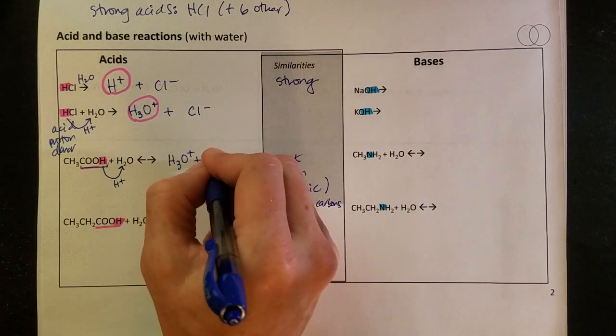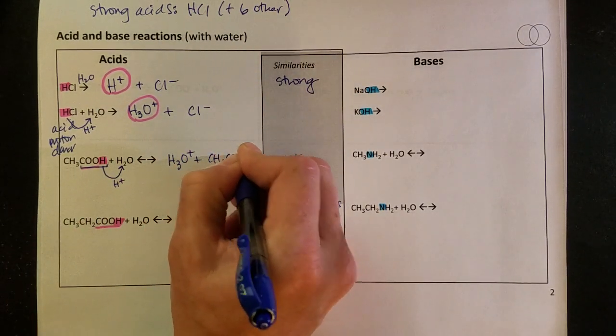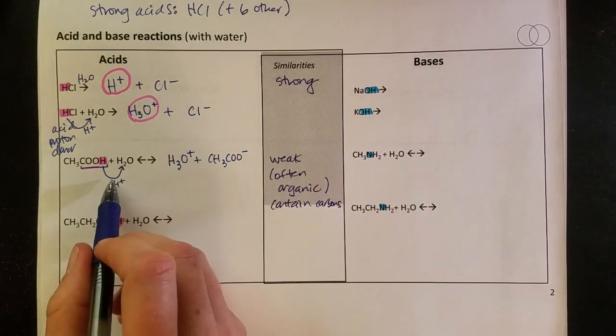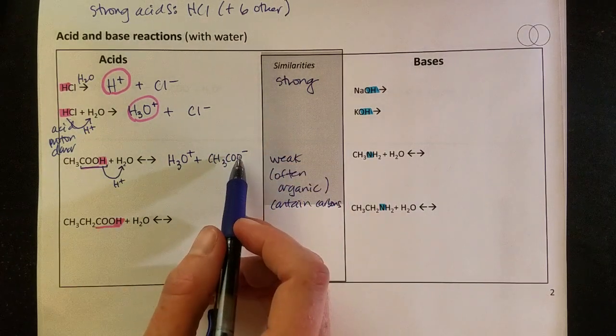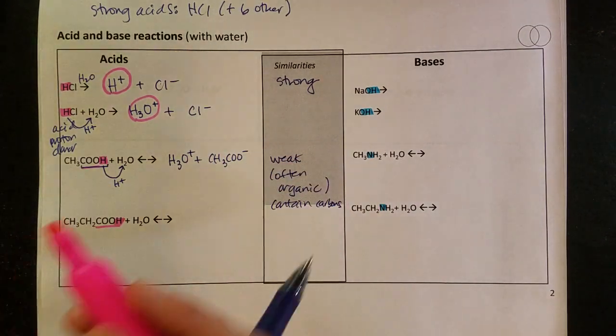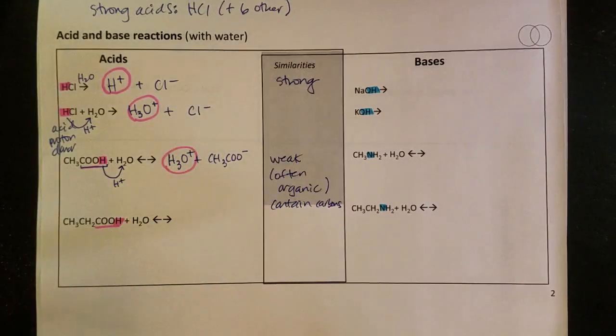And then I just want to copy carefully the rest of this CH3COO with a negative. It's lost that positive charge, so now it has a negative. And again, any time an acid reacts, I should get a proton as a product.